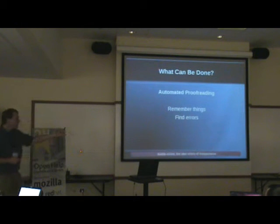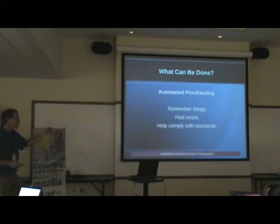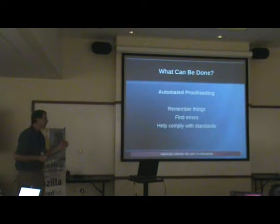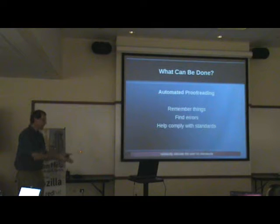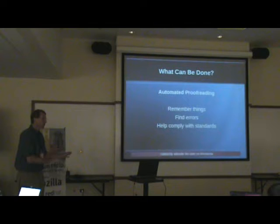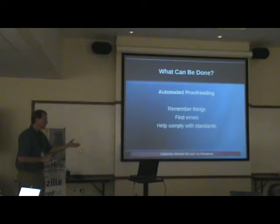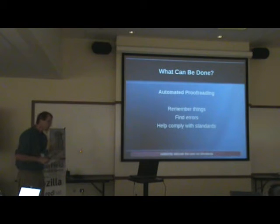We need a program that can look for errors — think of a human proofreader in program form, because we can't afford to pay a human proofreader. We need to look for subtle errors and errors of inexperience. We can help writers comply with standards by looking for allowed words and disallowed words — a whitelist and blacklist — and flag when a project-specific preferred term should be used.